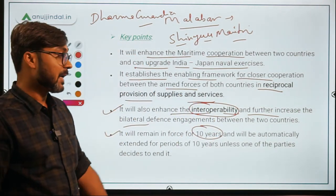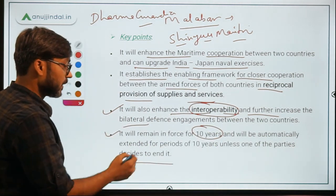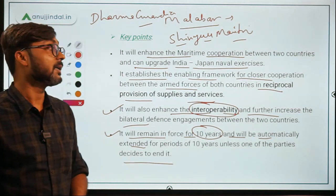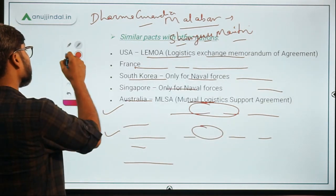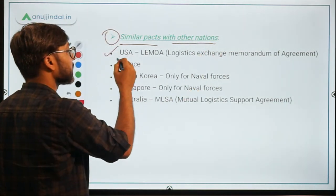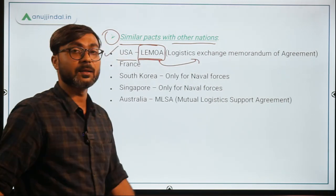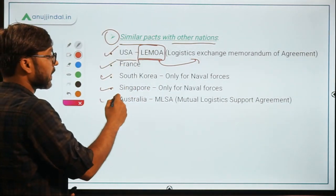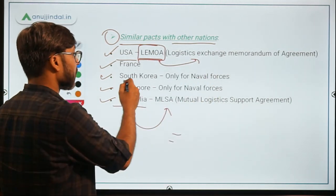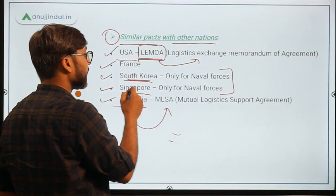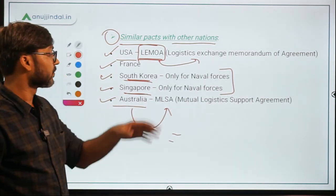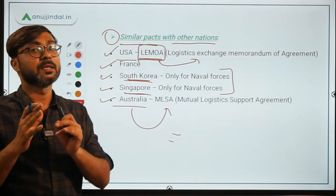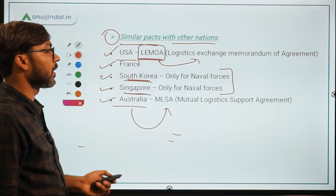The ACSA agreement will remain in force for 10 years and will be automatically extended for a further period of 10 years unless one of the parties decides to end it. India has similar logistic pacts with other nations: with the USA, we have LEMOA (Logistics Exchange Memorandum of Agreement); with Australia, the Mutual Logistic Support Agreement; and similar pacts with France, South Korea, and Singapore. Importantly, with South Korea and Singapore, the logistic agreement covers naval forces only, while with the US, France, and Australia it covers the entire military — army, air force, and navy.